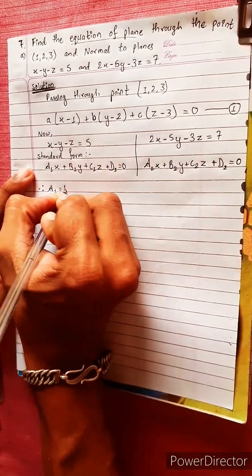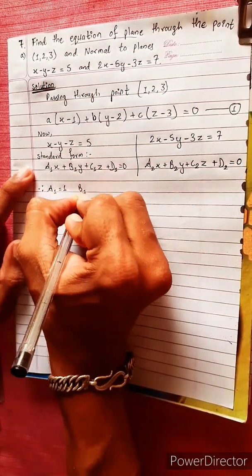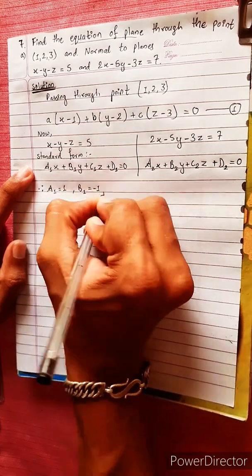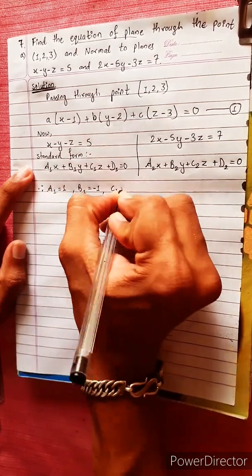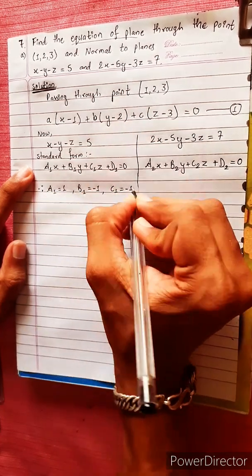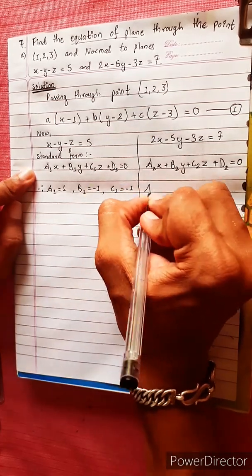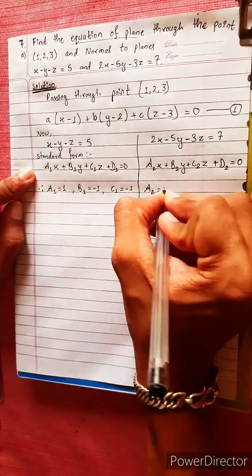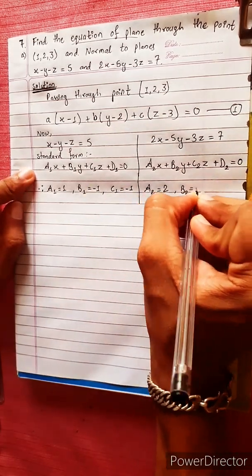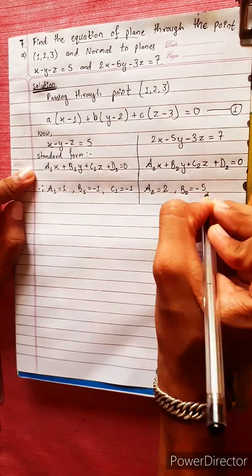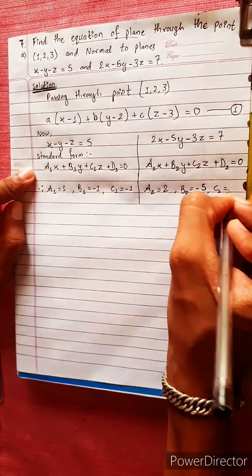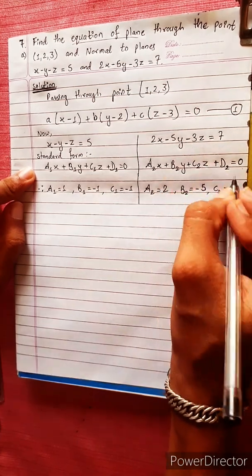From the first plane: a₁ = 1, b₁ = -1, c₁ = -1. From the second plane: a₂ = 2, b₂ = -5, c₂ = -3.